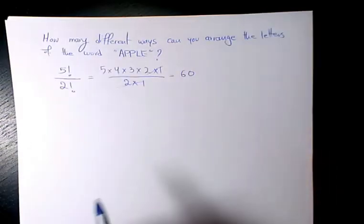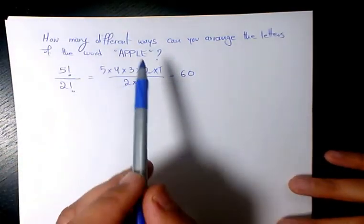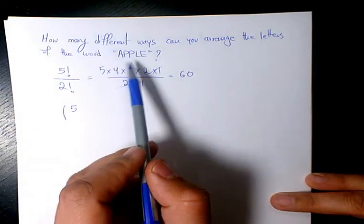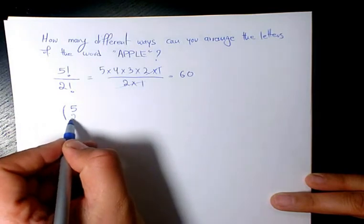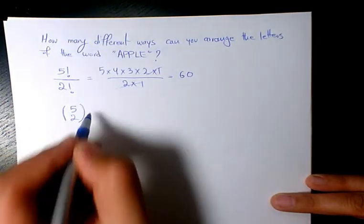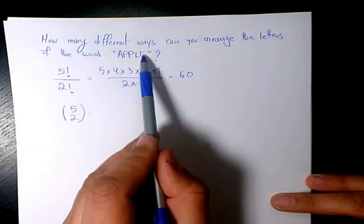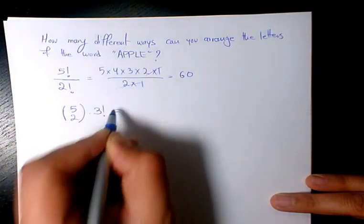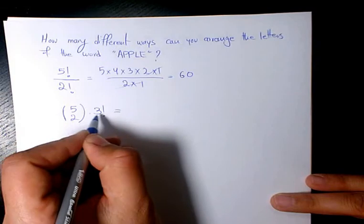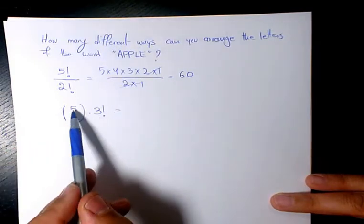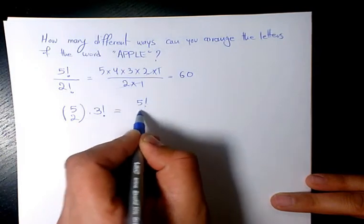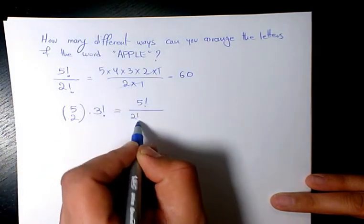Another way to calculate this kind of example: we have 5 letters, 3 different letters, and 2 of them are the same. So 5 choose 2 times the rest of the letters, which are 3 letters without any repeating. So we have 5 choose 2 times 3 factorial, which will be 5 factorial divided by 2 factorial divided by 2 factorial divided by 3 factorial multiplied by 3 factorial.